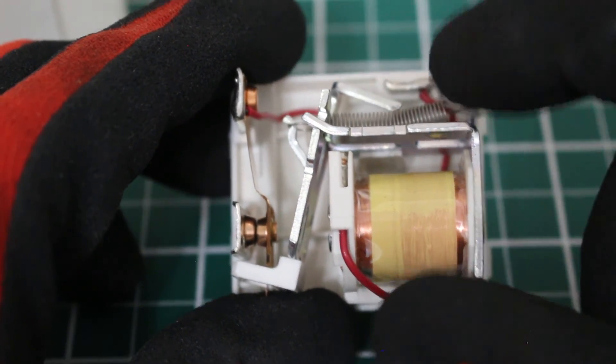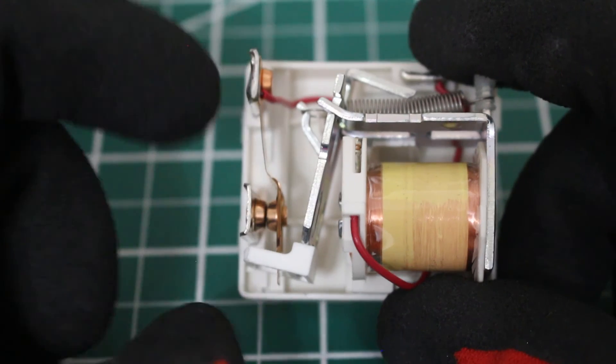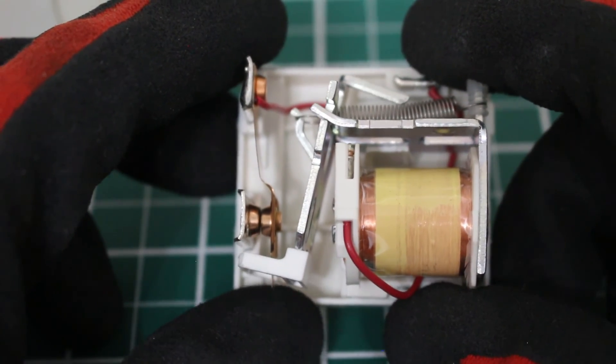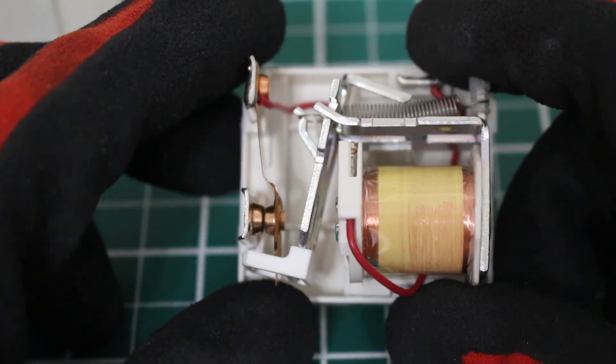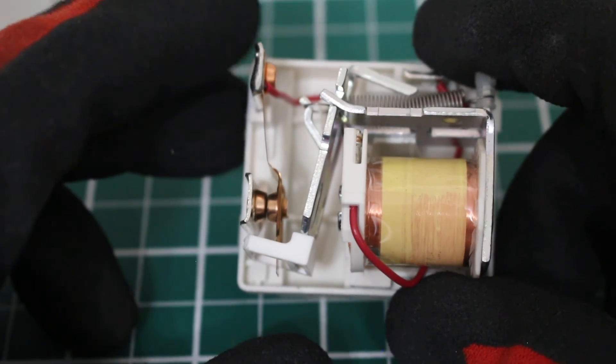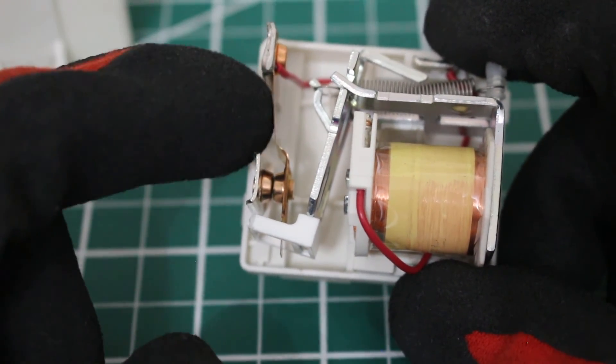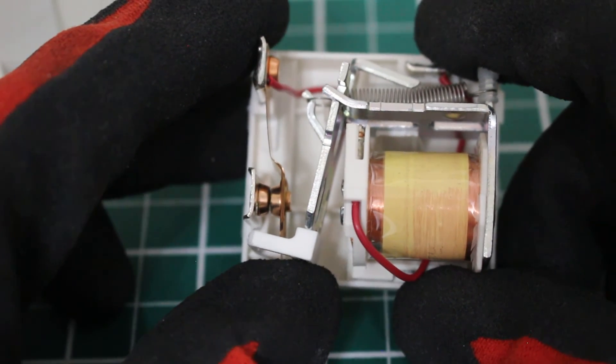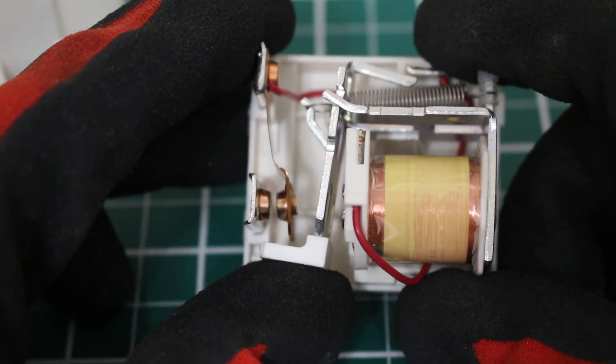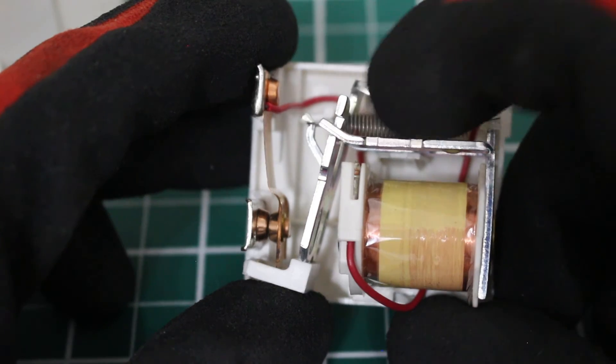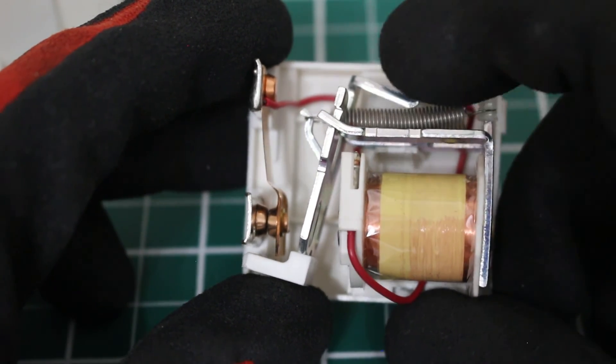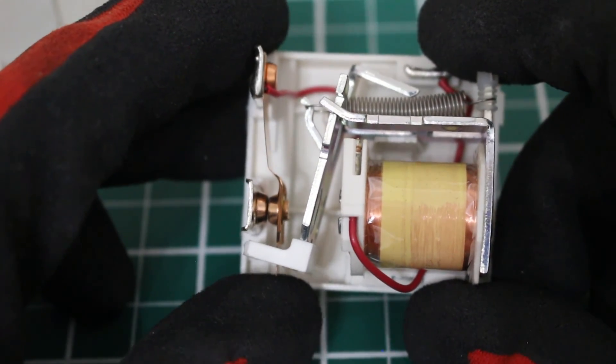So, voltage is going to flow through the coil. These contacts are closed, it's going to head to our start cap. Once we're up to speed, we're going to get that EMF, that back EMF. It's going to travel back. And then it's going to open the contacts once that force overcomes the tension of this spring.